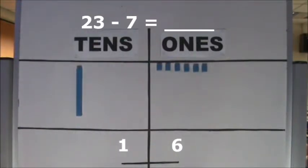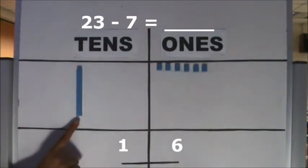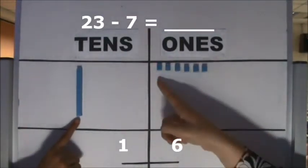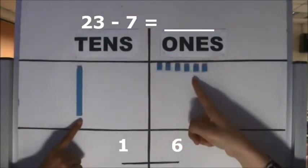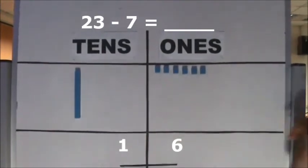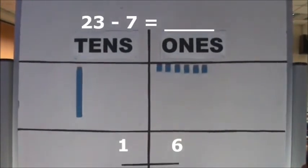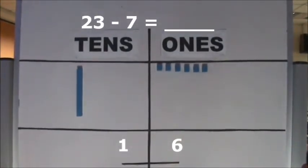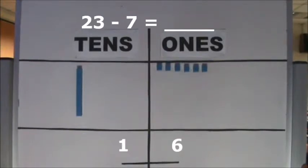1 ten and 6 ones make 16. When we subtract 7 from 23, we get 16.